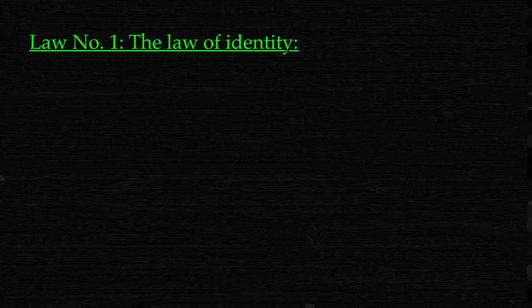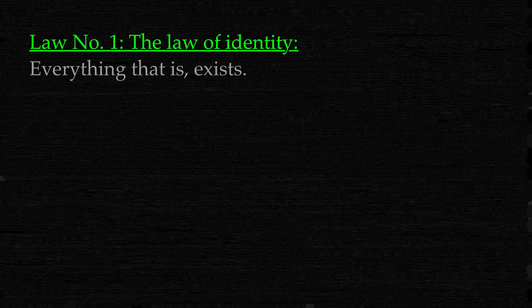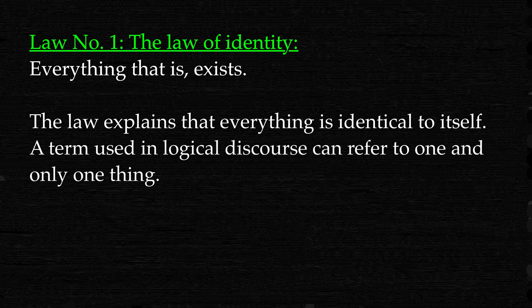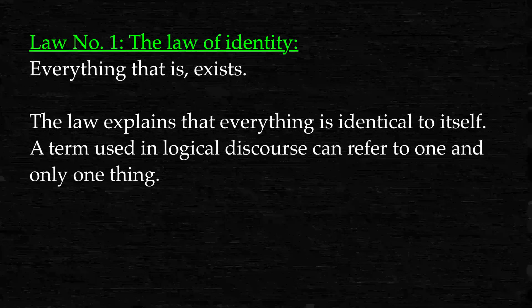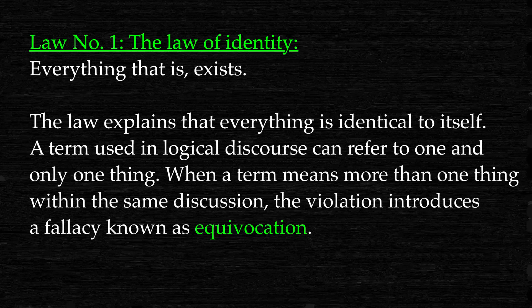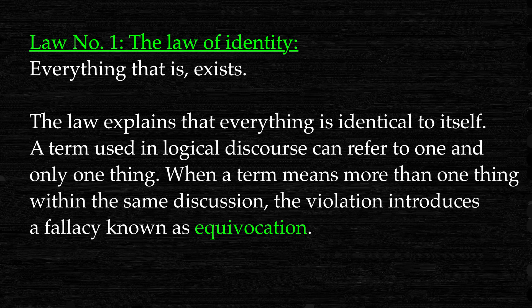Law 1: The law of identity. Everything that is, exists. The law explains that everything is identical to itself. A term used in logical discourse can refer to one and only one thing. When a term means more than one thing within the same discussion, the violation introduces a fallacy known as equivocation.